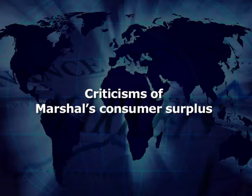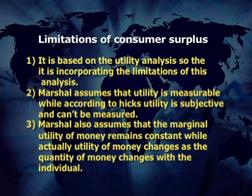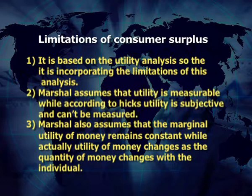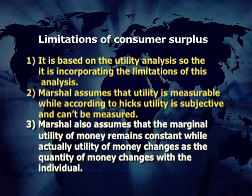Let us begin with the criticism of Marshall's consumer surplus. There are a few fundamental limitations. First, it is based on utility analysis, so it incorporates the limitations of that analysis. Second, Marshall assumes that utility is measurable, while according to Higgs, utility is subjective and cannot be measured. Third, Marshall also assumes that the marginal utility of money remains constant, while actually the utility of money changes as the quantity of money changes with the individual.